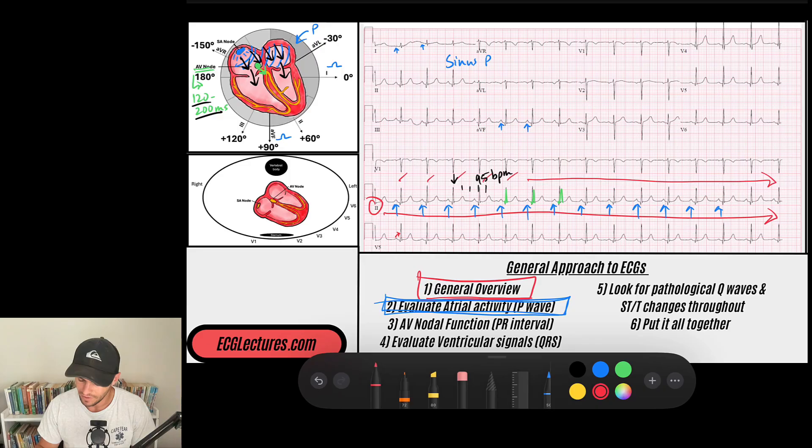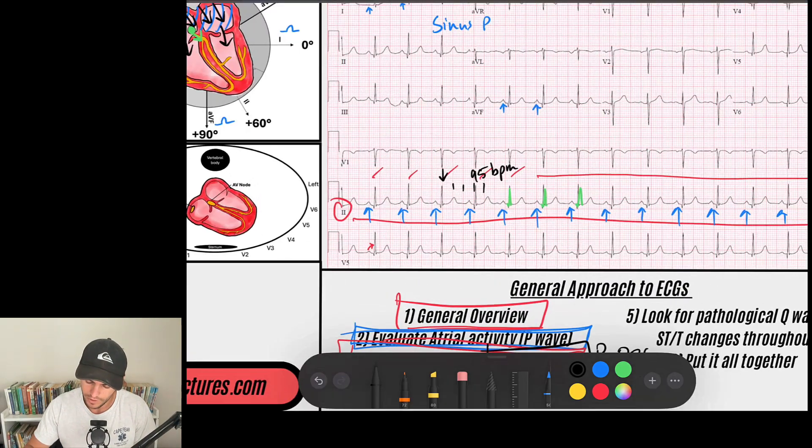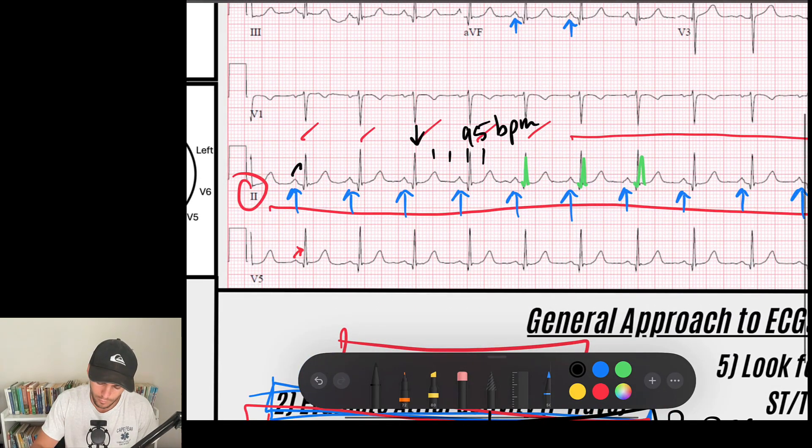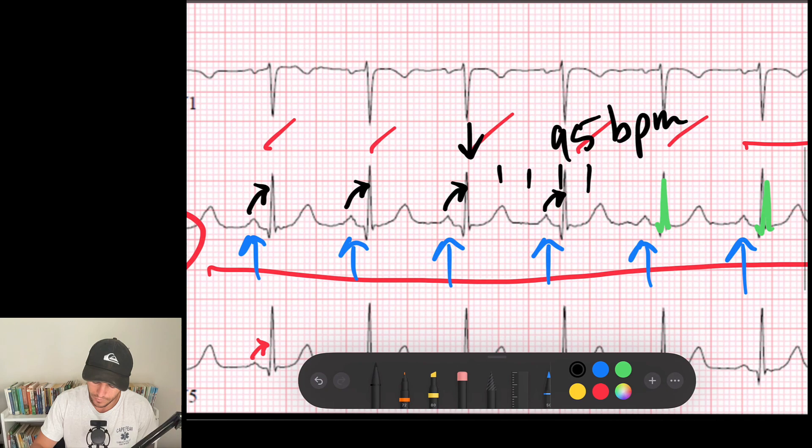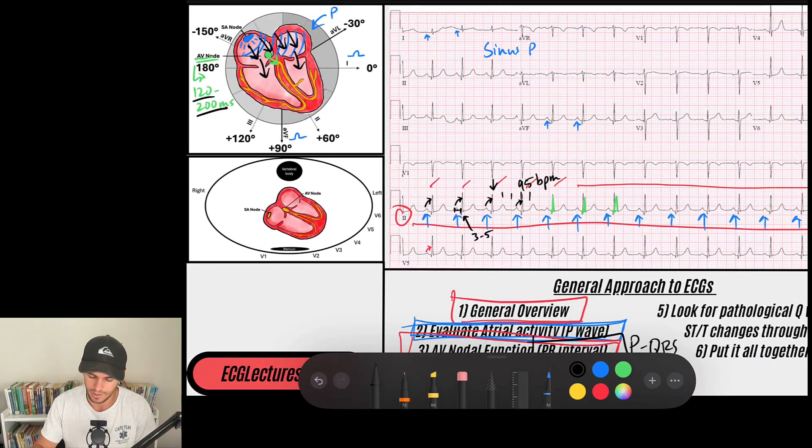So whenever I evaluate my AV nodal function, I'm specifically looking at PR interval, or AKA the relationship between the P wave and the QRS. What is that relationship? In this case, we notice that there are P waves before every QRS. These are my arrows. These P waves are conducting to QRS complexes. When I measure the PR interval, I notice that the PR interval is somewhere between three to five small boxes, which is 120 to 200 milliseconds.